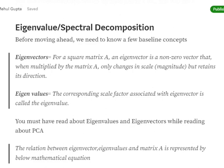And eigenvalues: the corresponding scale factor associated with eigenvector is called eigenvalue. Eigenvector and eigenvalues are basically related to directions of a particular matrix.